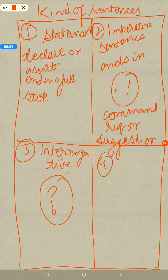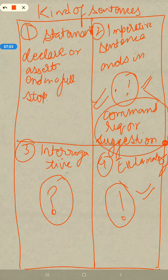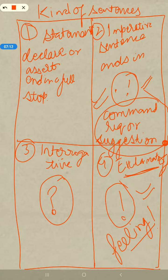Fourth: exclamatory sentences, which end with an exclamation mark. Here there is an important difference - in the imperative sentence there will be a command, request, or suggestion, whereas in an exclamatory sentence there will be feelings. Always remember this. These are the four kinds of sentences that you have to learn.